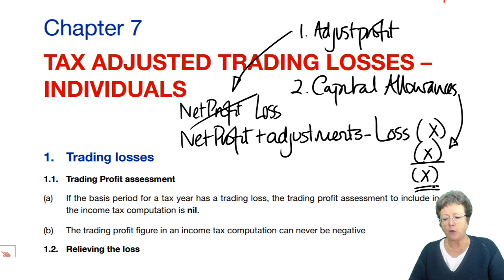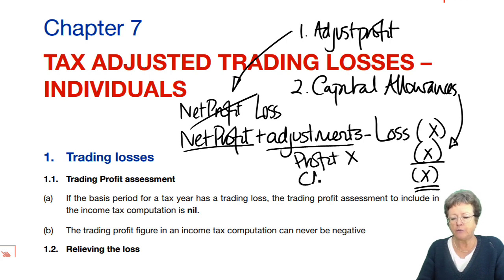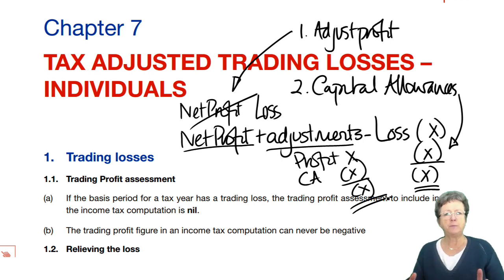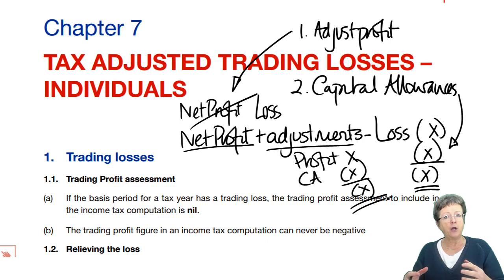The third situation is where you have a net profit, you've made the adjustments, and you still have a profit, but by the time you take off your capital allowances, you end up with a loss. So don't be phased by losses. They can turn up in all sorts of different places, but if you follow the pro formas exactly the same as you would for a profit when you're adjusting, you deduct the capital allowances in the way you would normally do with the brackets — and then at the end of the day, you've now got a loss.